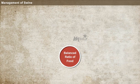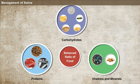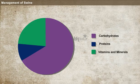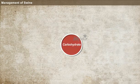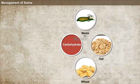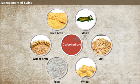Feeding practices. The feed provided should contain a balanced ratio of carbohydrates, proteins, vitamins, and minerals. The feed should contain more than 70% carbohydrates. The best sources of carbohydrate feed are cereals like maize, oat, wheat, and rice, and also the by-products of grains such as wheat bran, rice bran, etc.